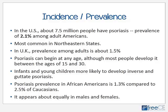Infants and children who develop psoriasis are much more likely to develop the guttate type and are more likely to be triggered by strep infections or drug reactions. Psoriasis prevalence in African Americans is only 1.3 percent compared to Caucasians at 2.5 percent, and psoriasis appears equally in both males and females.